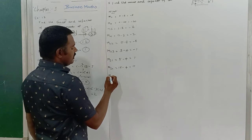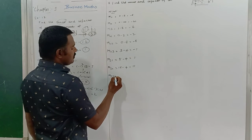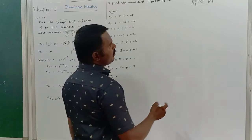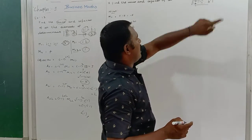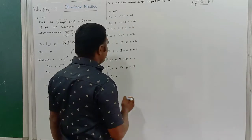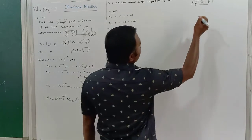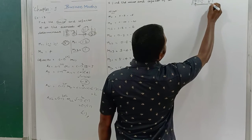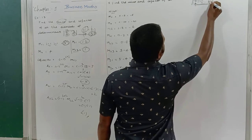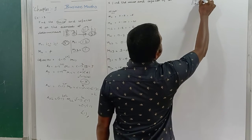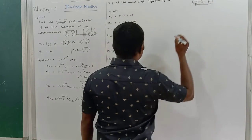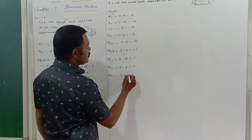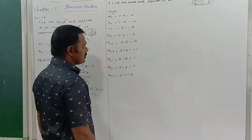Minor M33: third row, third column — element 0. I remove that row and column, giving 6 minus 2 = 4. So M33 = 4.